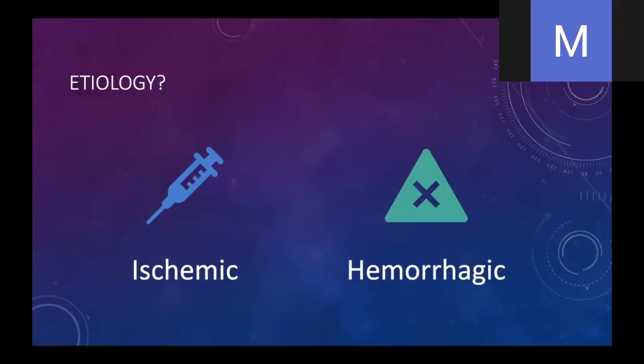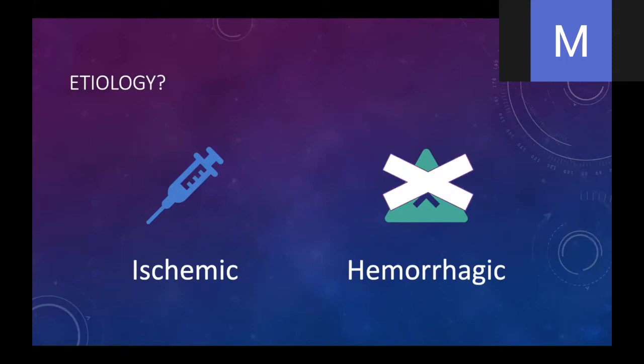The first thing you want to determine when a patient comes in: is this an ischemic event — a blocked blood vessel — or is it a hemorrhagic event where the blood vessel broke, prohibiting blood from getting to the affected area? This lecture is going to focus on the ischemic ones; we're not going to talk about the hemorrhagic ones here. The treatment is vastly different for hemorrhagic strokes, but we'll talk about that in our next lecture.